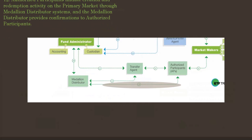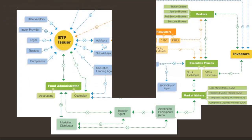Lastly, step 12: authorized participants initiate creation and redemption activity on the primary market through distributor systems, and the distributor provides confirmations to authorized participants. Looking at it as a whole, you can follow the map we just discussed — ETF issuer with custodian, to the fund administrator, transfer agent, or to the distributor, which then goes to the authorized participants, to the market makers who have the option of going to the primary or secondary market, then to the broker, then to the investors, whose orders are processed back to the exchange. The fund administrator confirms all details with the distributor, who then sends everything to the transfer agent for record keeping.